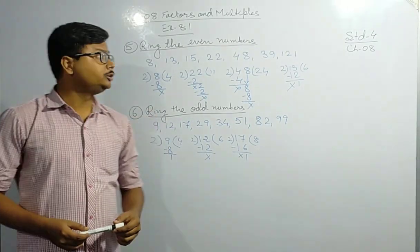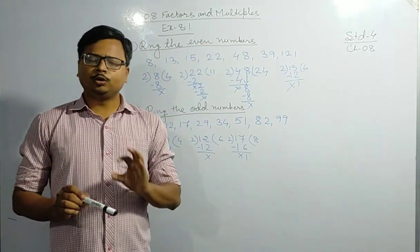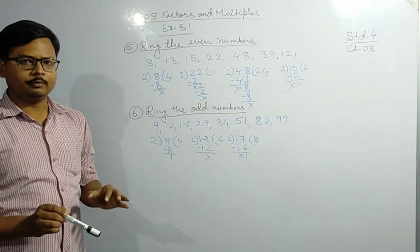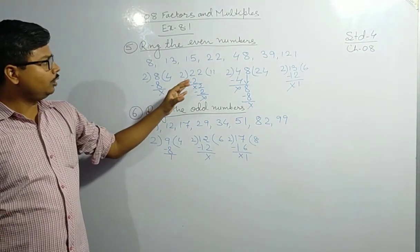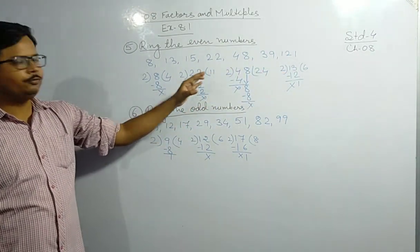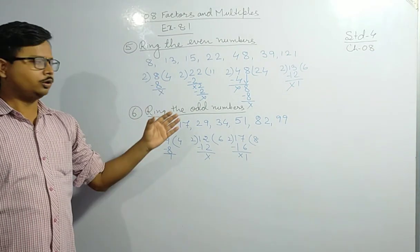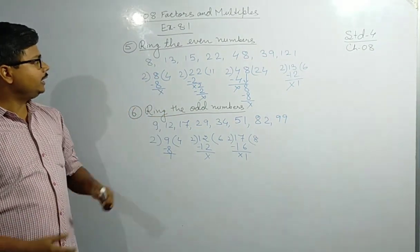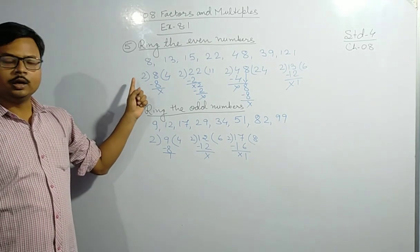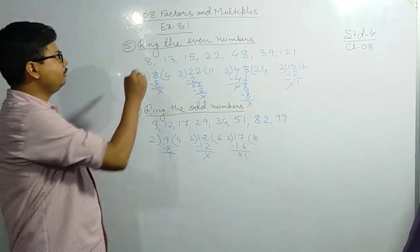Now let us solve question number five: ring the even numbers. As you know, a number divisible by two is an even number. I have divided a few numbers to check. The first number is eight — we divide eight by two and the remainder is zero, so eight is an even number.